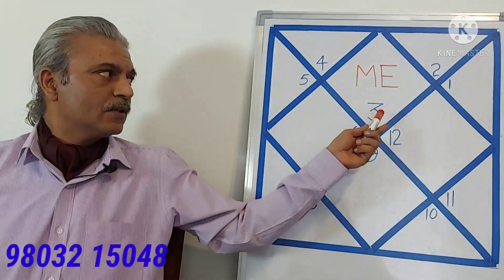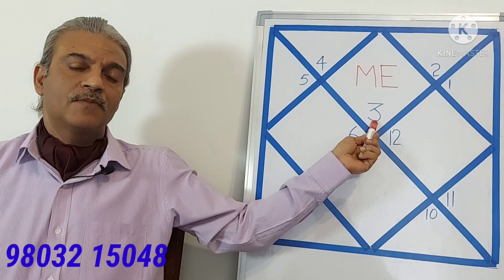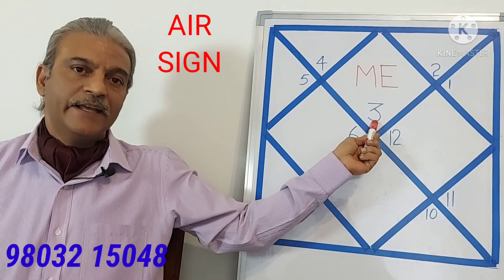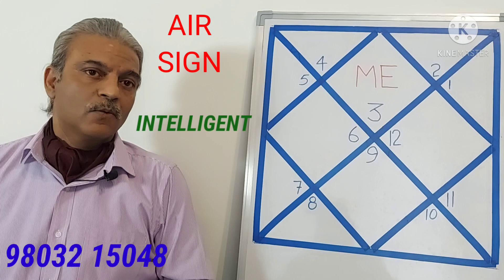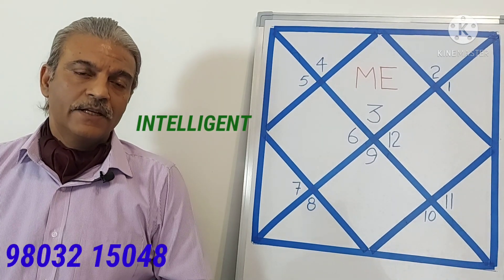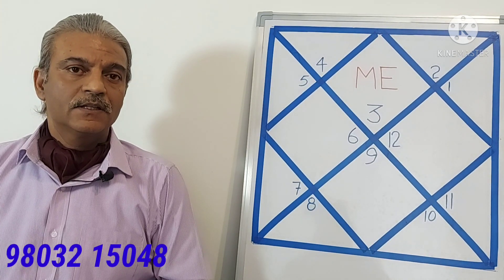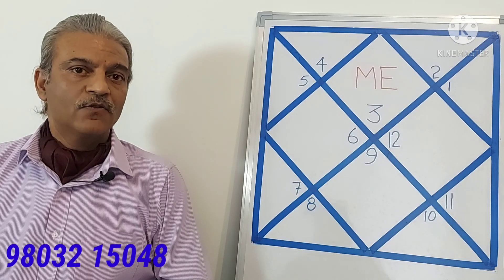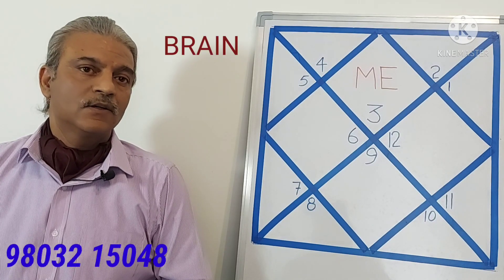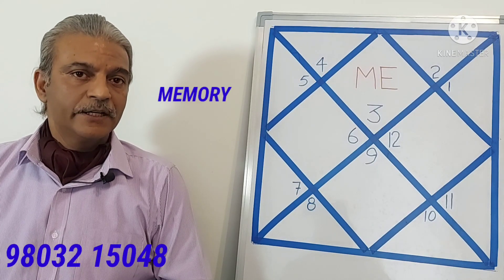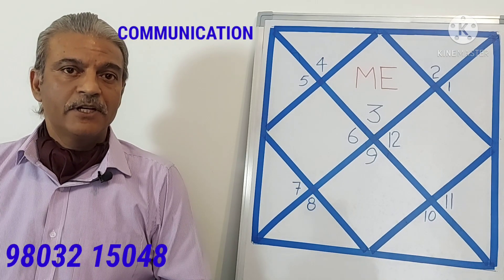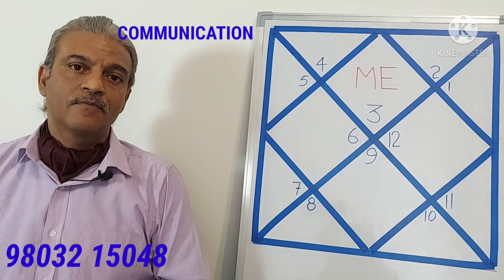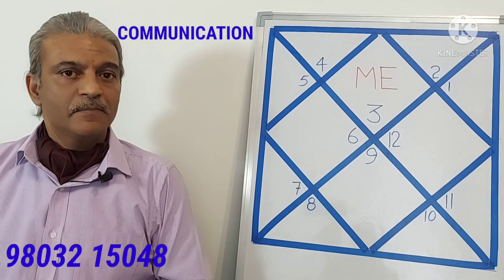So, this sign, the third sign, Gemini is an airy sign and therefore it makes the person very intelligent. Mercury, who is the Lord of Gemini, is also an indicator of our brain power, our ability to remember mathematics, our ability to communicate and business.